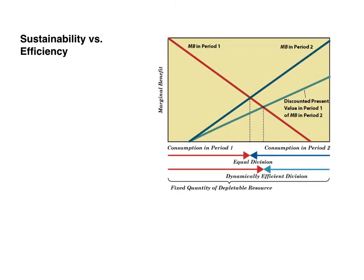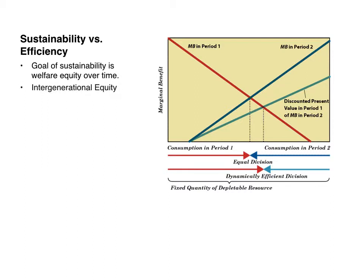This concerns sustainability versus efficiency. Here is our graph — it's a two-period model with declining marginal benefit. The goal of sustainability is welfare equity over time, which we can call intergenerational equity.